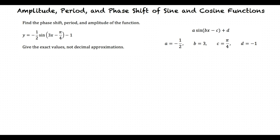Now that we've defined each variable, we can solve for the phase shift, period, and amplitude. The phase shift is c divided by b. When we substitute in the variables, we get π fourths divided by 3. This equals π twelfths. c is positive, so the horizontal translation is to the right.